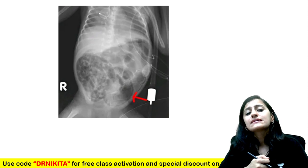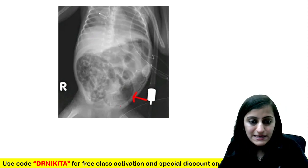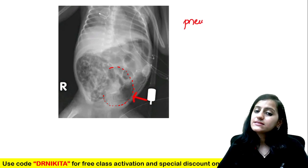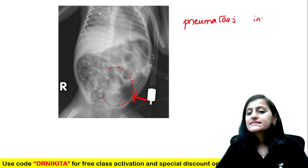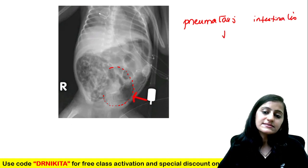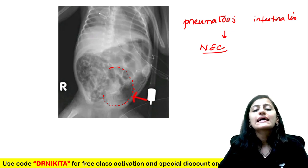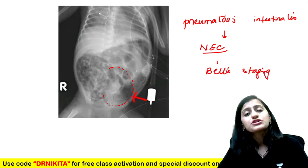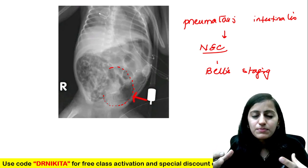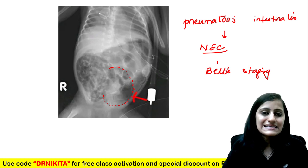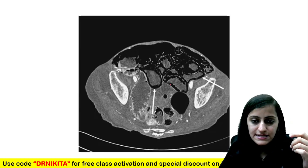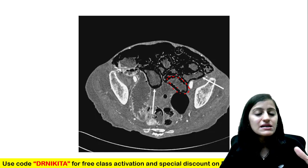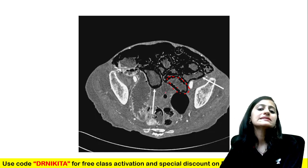In this child, air is seen outlining the bowel wall — black air outlining the bowel loop. This is pneumatosis intestinalis — air in the bowel wall — which can be seen in necrotizing enterocolitis (NEC). Bell's staging is used for NEC. This is the ischemic, gangrenous bowel leading to air formation — pneumatosis intestinalis. On CT in this patient, air is seen all around the bowel in the bowel wall, confirming ischemia leading to gangrene and gas formation.